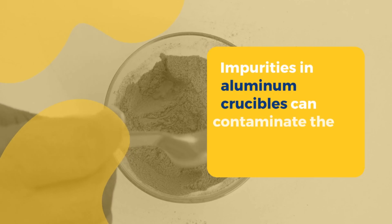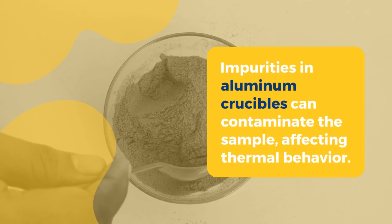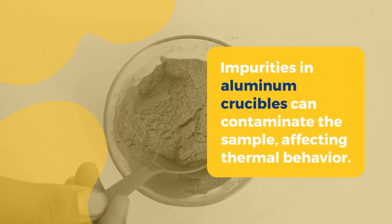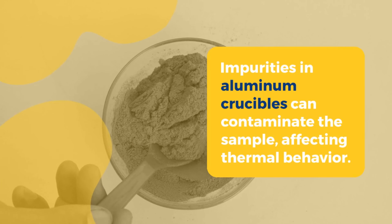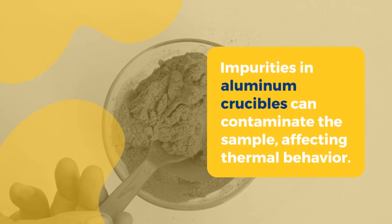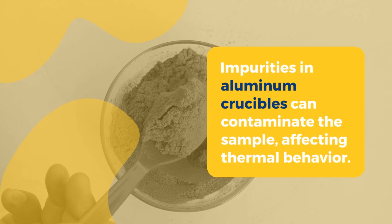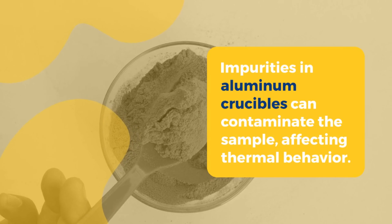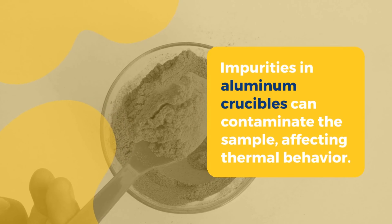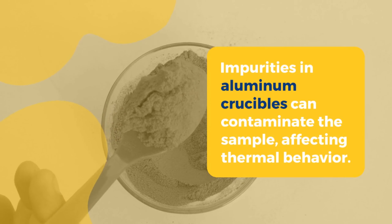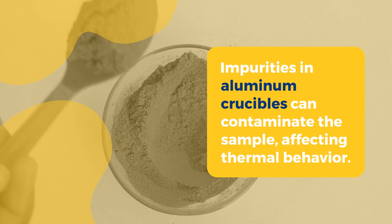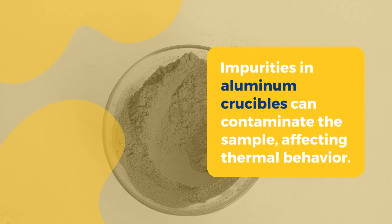Aluminum crucibles may contain impurities or residual traces of substances that could contaminate the sample. These contaminants can influence the thermal behavior of the sample, leading to inaccurate results.